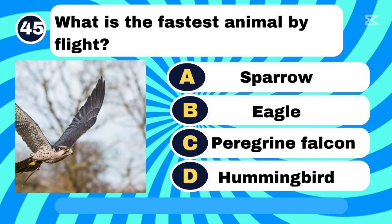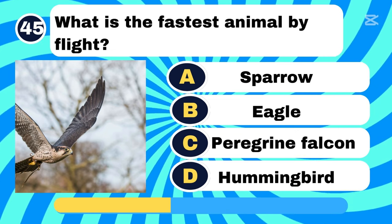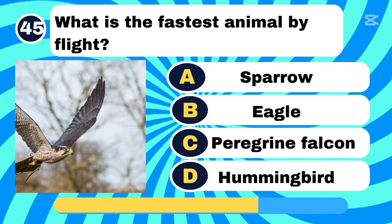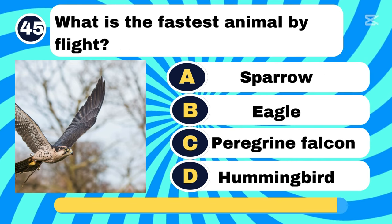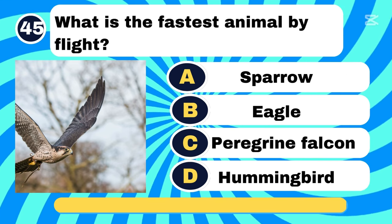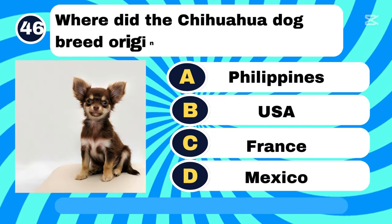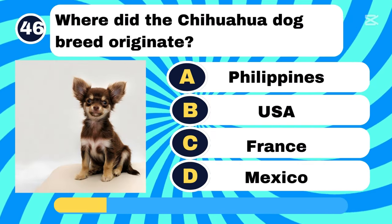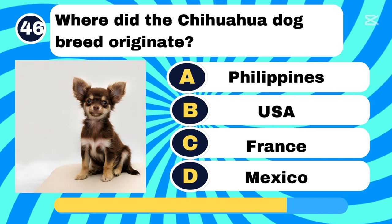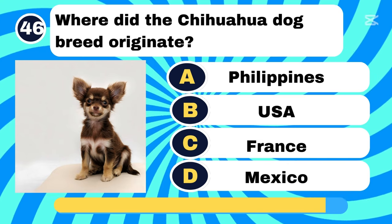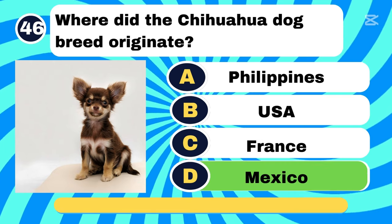What is the fastest animal by flight? Letter C, Peregrine Falcon. Where did the Chihuahua dog breed originate? Letter D, Mexico.